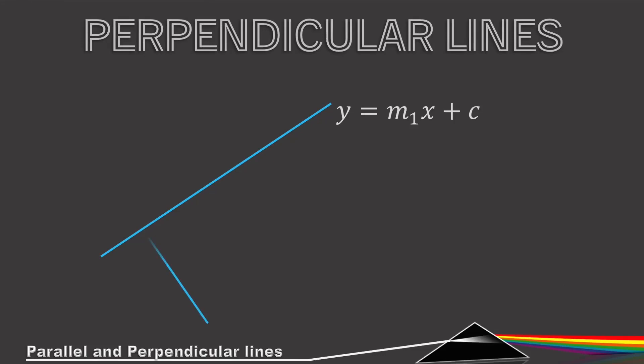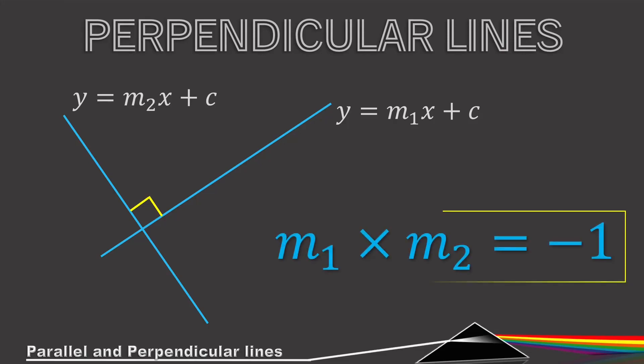For perpendicular lines, if y = m1·x + c and y = m2·x + c and the lines are perpendicular (the angle between them is 90°), then multiplying the two gradients gives negative one: m1 × m2 = −1. You can use this to prove lines are perpendicular given their gradients, or to find the equation of a line perpendicular to another.